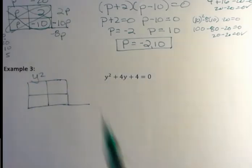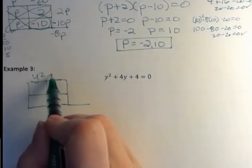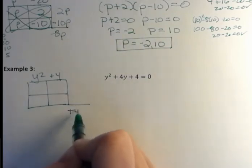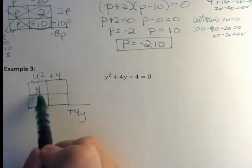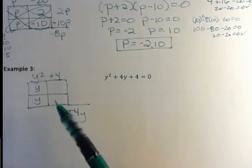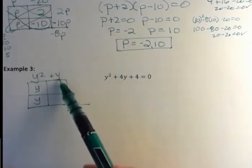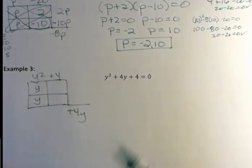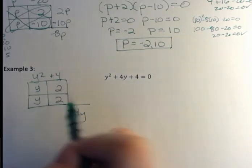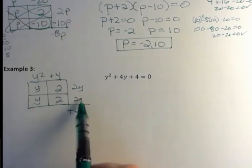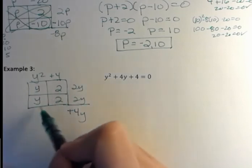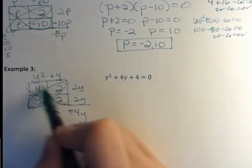We have y squared. We've got our variables matching. That's good. We have positive 4. And down below, we have positive 4y. So we have y times y. And how are we going to multiply two numbers to get 4 and add two numbers to get 4? Well, that's going to be 2 and 2. 2y and 2y add up to 4y. So I have the same thing on both diagonals.